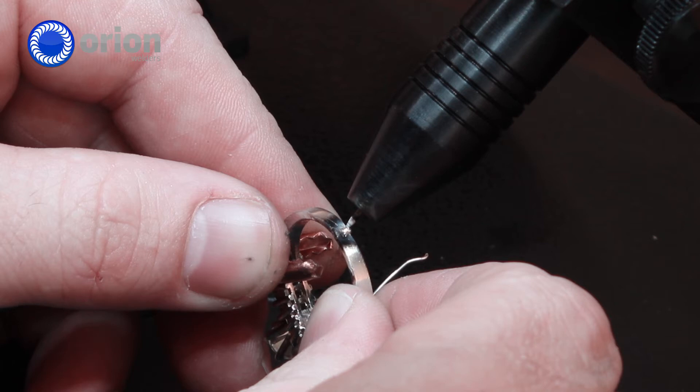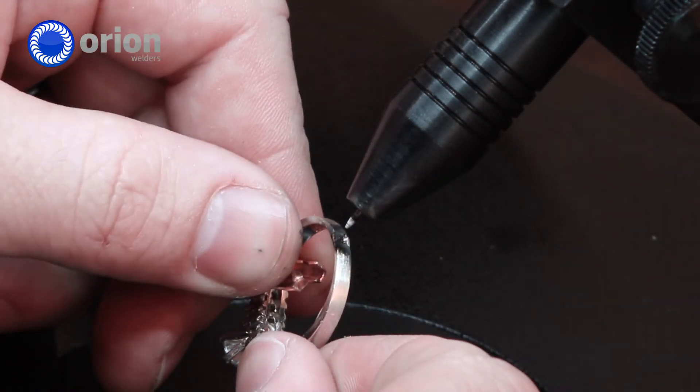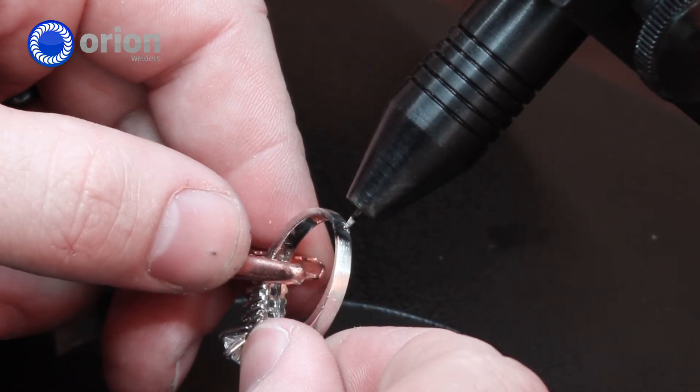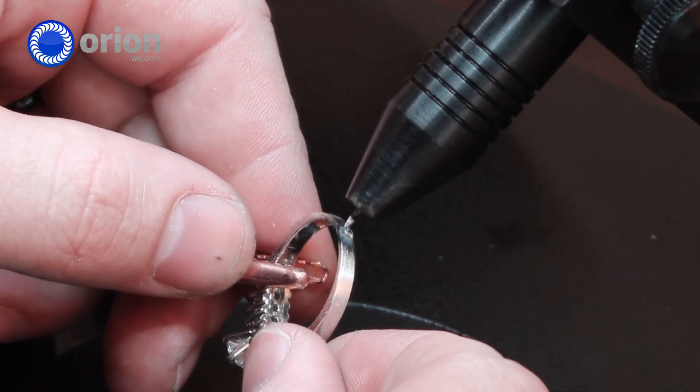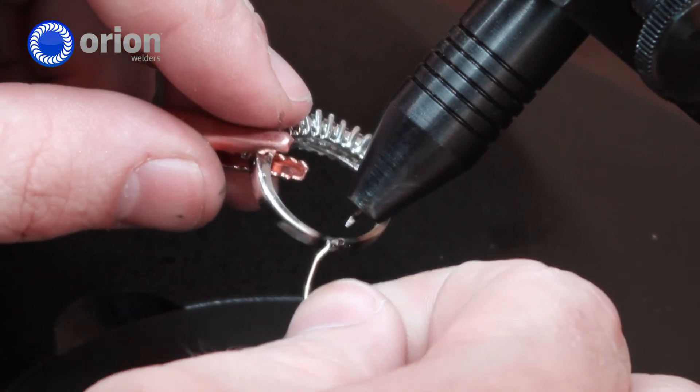The advantage of doing it with the Orion is you do not have that solder joint, so you'll never have the discoloration that the solder joint can have, but you also have a stronger bond than the solder joint, you don't have that weak spot because we have a pure metal to metal weld that is all the way through.